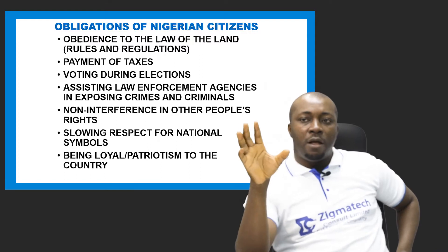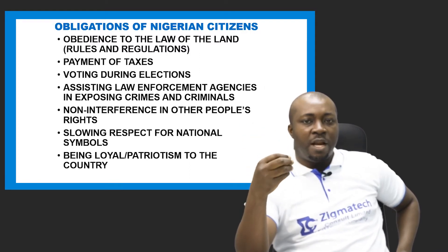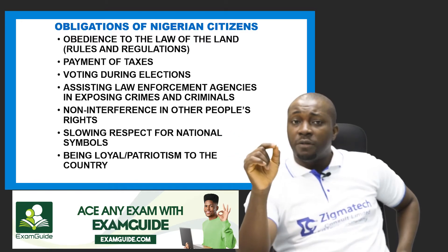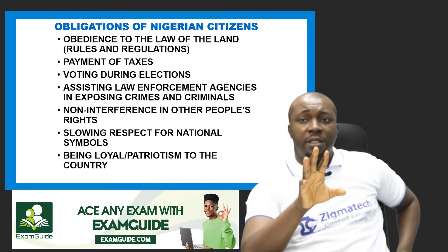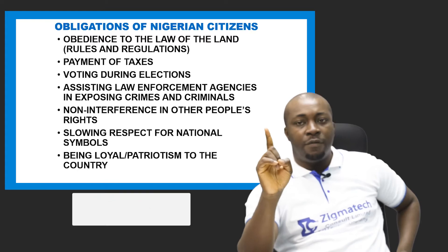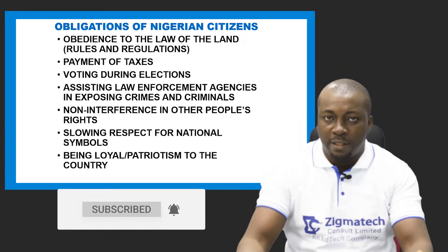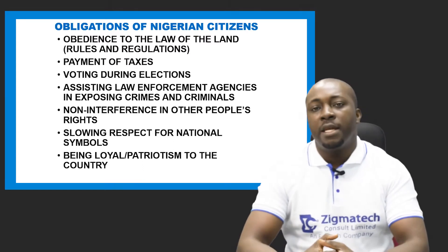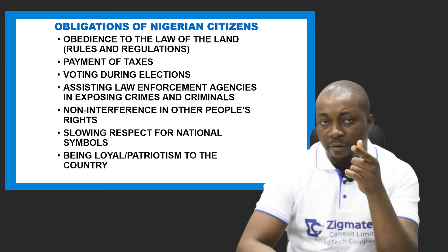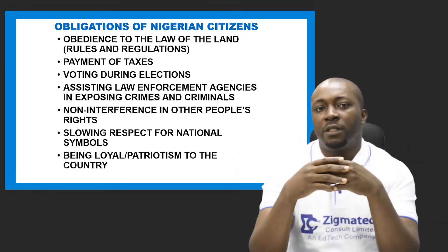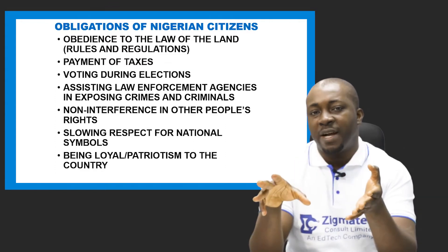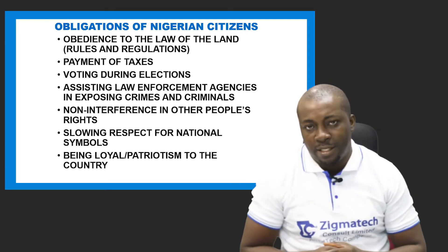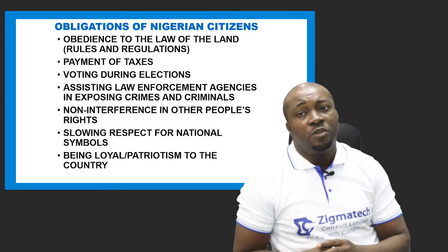One obligation is obedience to the law of the land. Citizens are expected to respect and obey the rules, regulations, and constitution of the country and not violate any of them. Citizens are also expected to pay taxes. Taxes are paid by income-earning members of the citizenry from their income, and the government makes revenue through these taxes — which it uses to provide social amenities, pay public servants, and carry out all the functions expected of government.